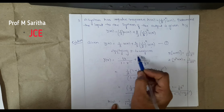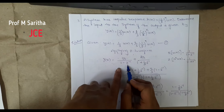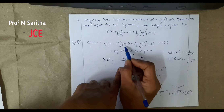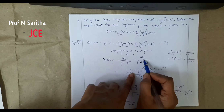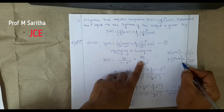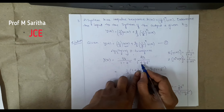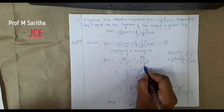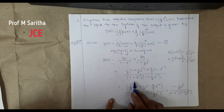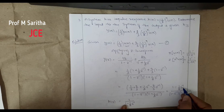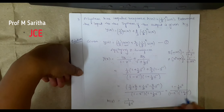Applying the Z-transform to y(n): Y(z) = (1/3)·1/(1 − z^(−1)) + (2/3)·1/(1 + (1/2)z^(−1)), since the Z-transform of u(n) is 1/(1 − z^(−1)) and a = −1/2 gives a plus sign in the denominator. Taking the LCM and simplifying: Y(z) = (1 − (1/2)z^(−1)) / [(1 − z^(−1))(1 + (1/2)z^(−1))].